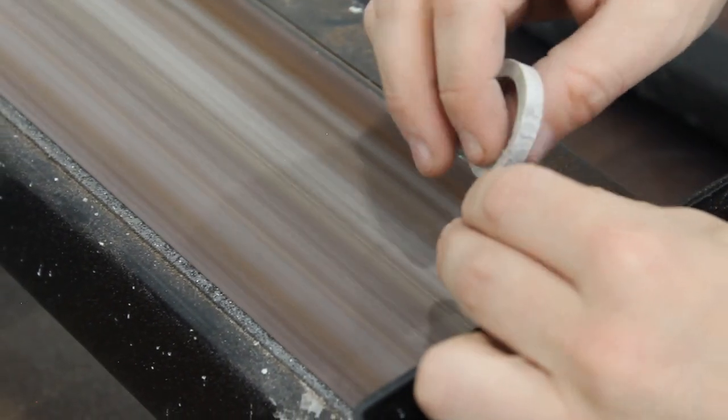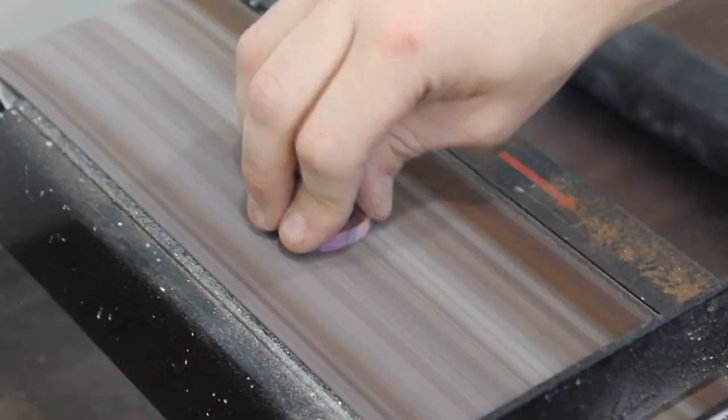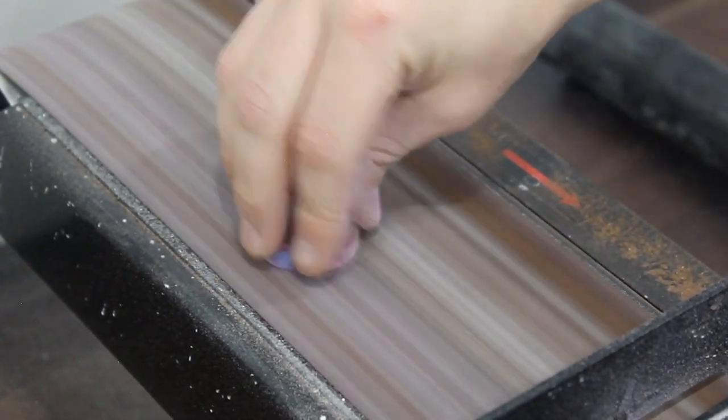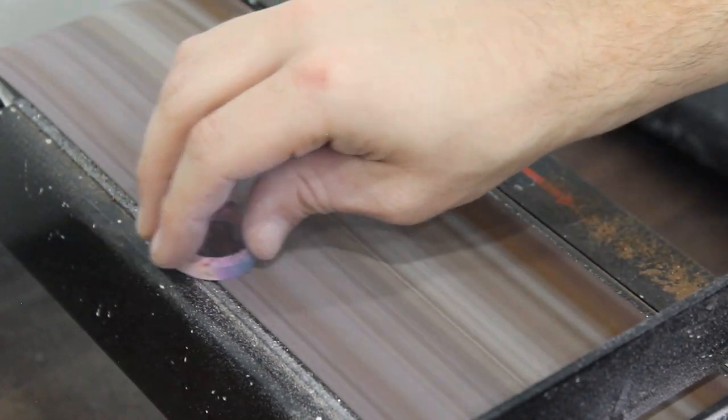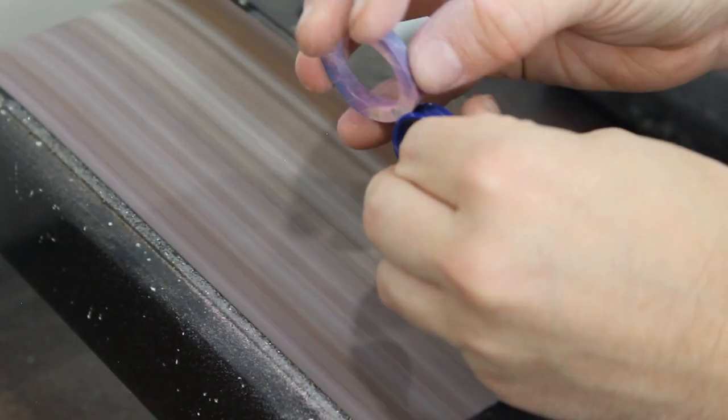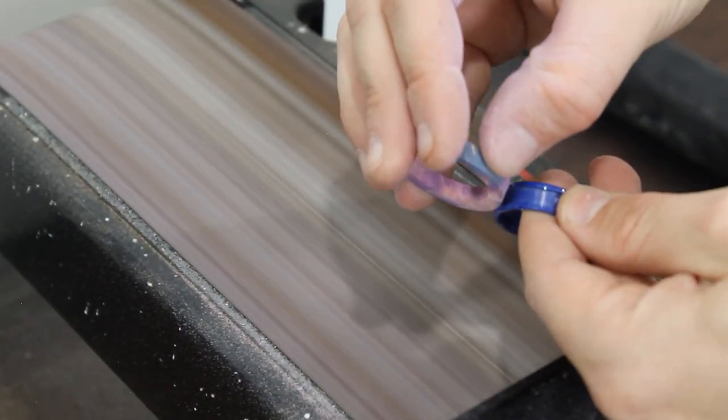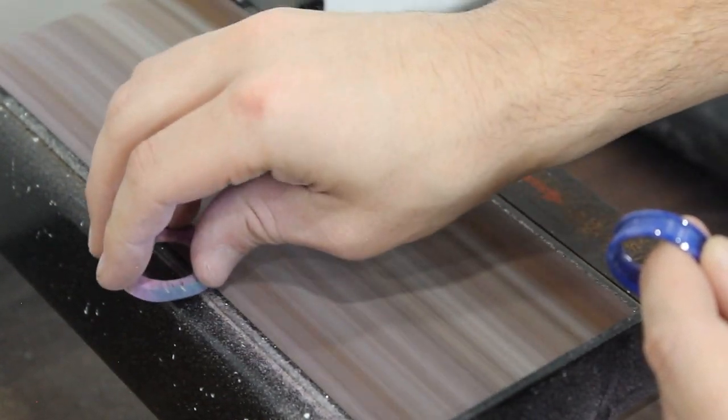There is another way of doing this other than the sander. We'll probably show that another week, but for now I just use the sander. It's quick, it's easy, and you just have to be very careful. Go as fast as you're comfortable with because if you go too short you're going to have to get a new piece again.